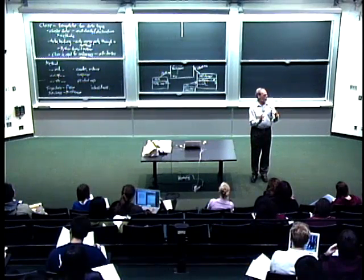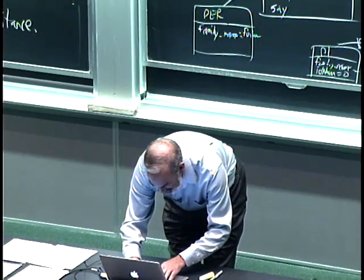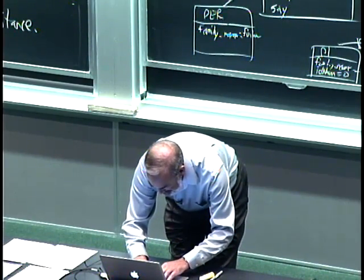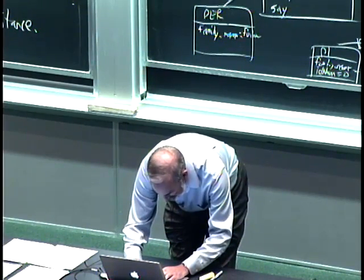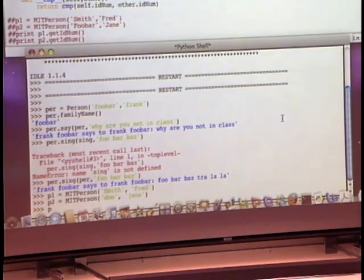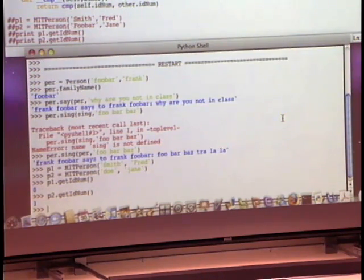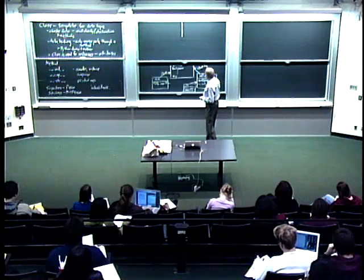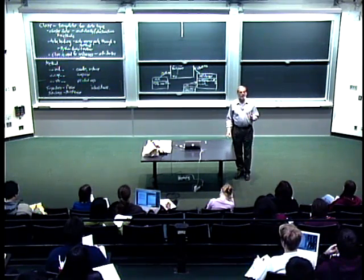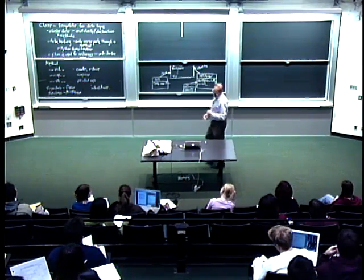Every time I generate an instance, I increment that counter. If I make P2, another MIT person, and ask for the ID numbers, the first one is zero and the second one is one — I'm just incrementing a global variable. Now that I've got a beginning of a hierarchy with this notion of inheritance, I can ask a function inside one class to use a function from a class it can reach by going up the chain.